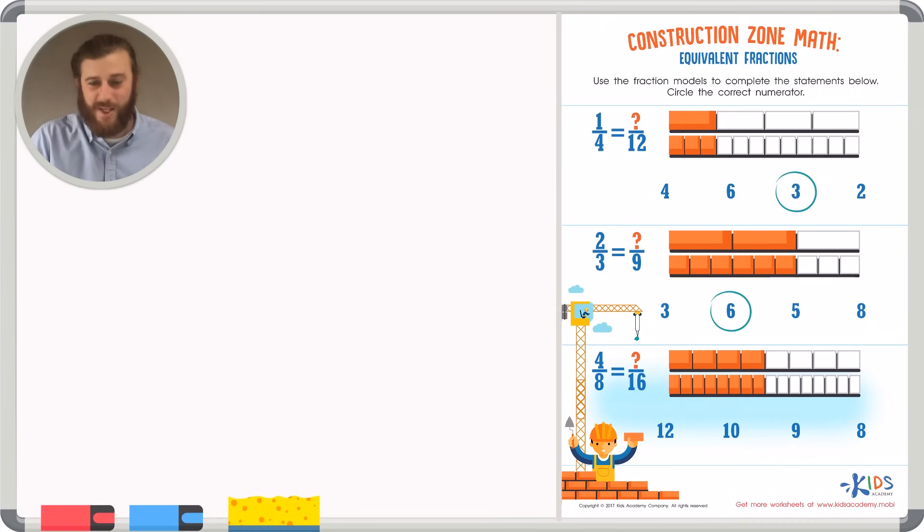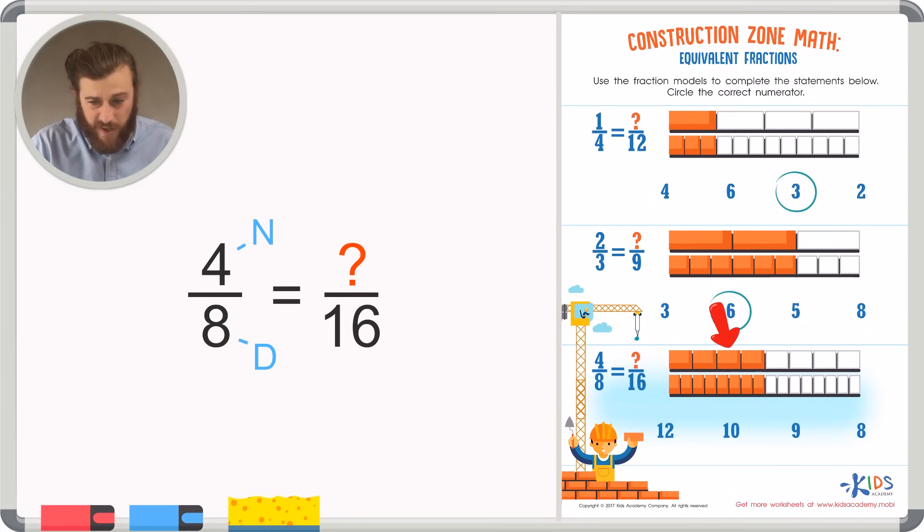Let's take a look at our last problem. Our first fraction is four-eighths, and our second fraction is blank sixteenths. Let's identify the numerator and denominator in the first fraction. In the first fraction, the numerator is four. That means there are four pieces shaded in. The numerator is always the top number. The bottom number is our denominator. That tells us how many pieces there are in total. And in total, there are eight pieces in our first fraction.